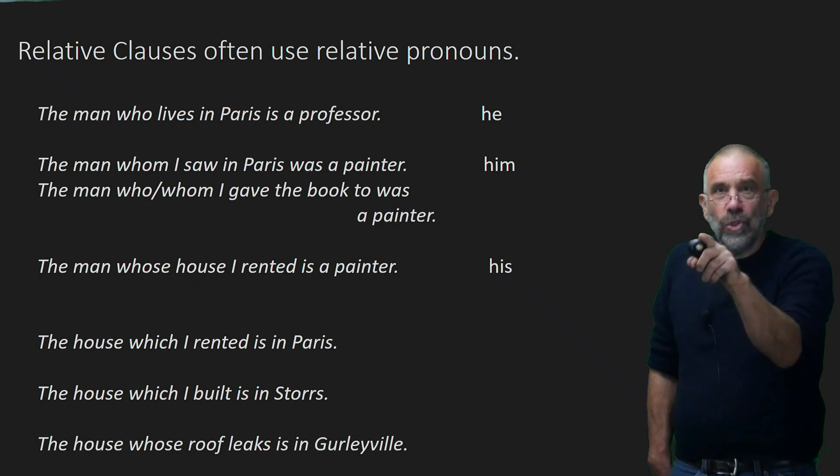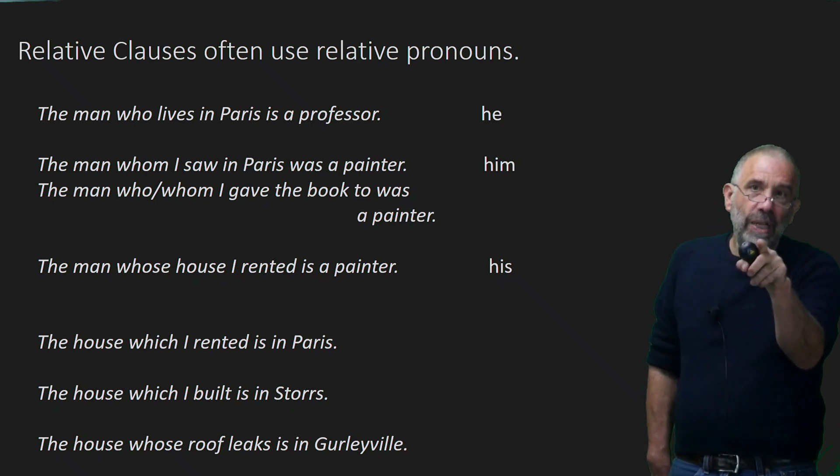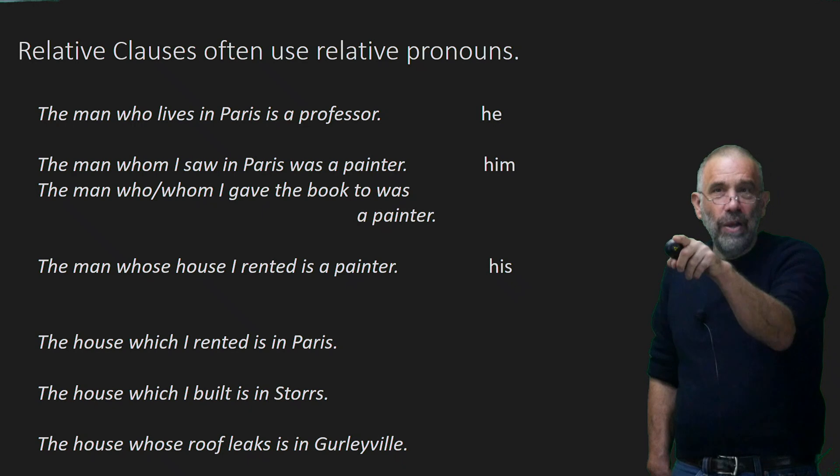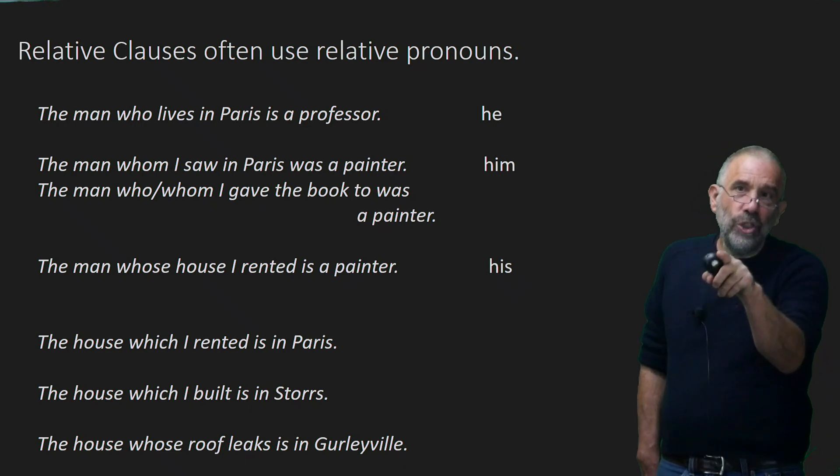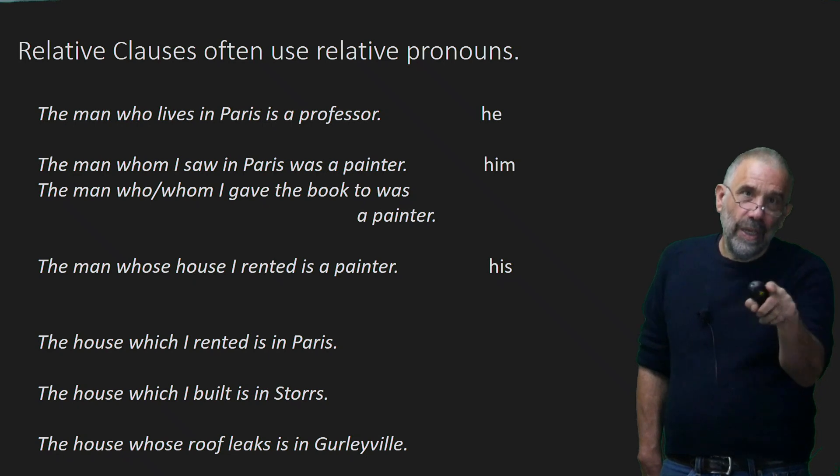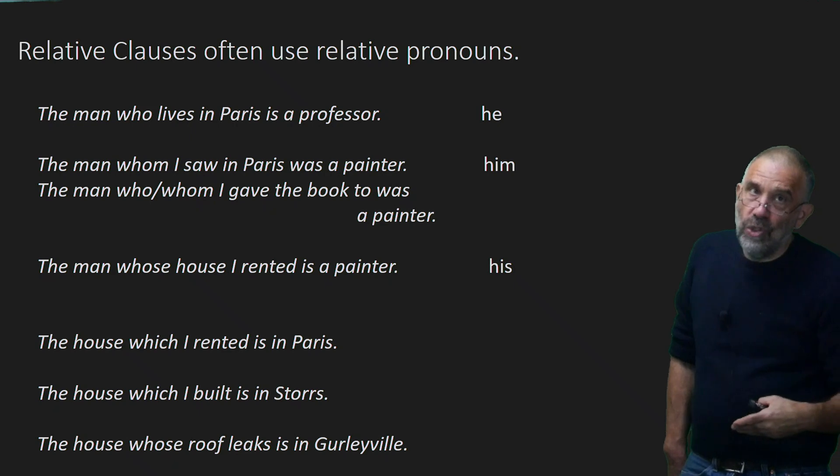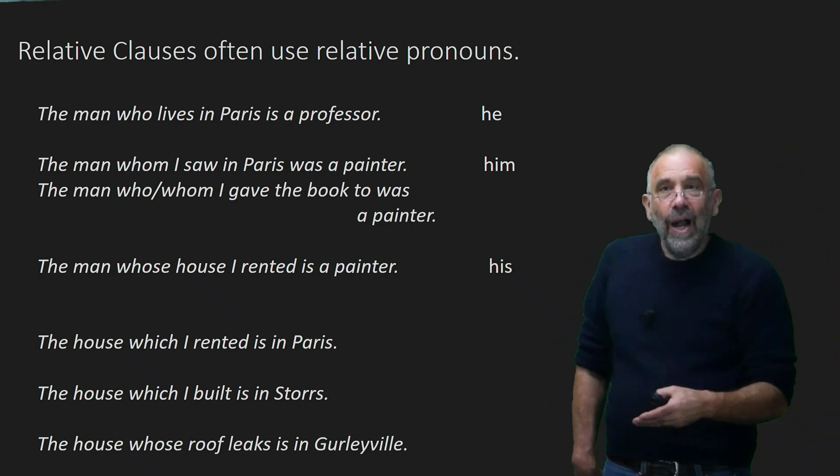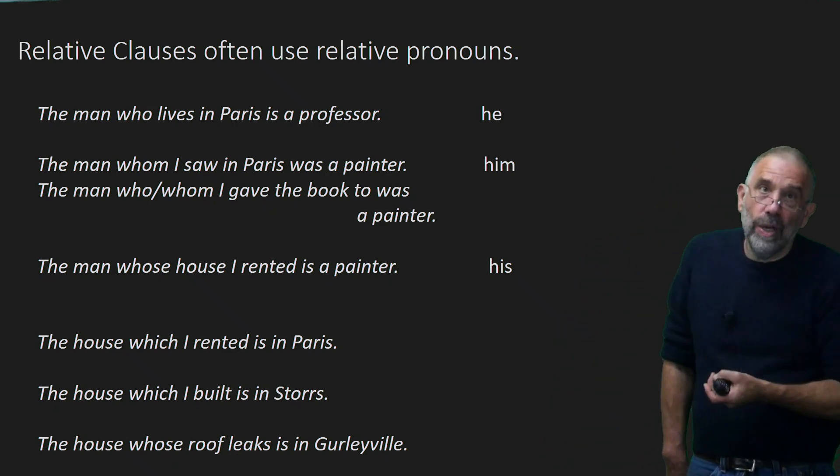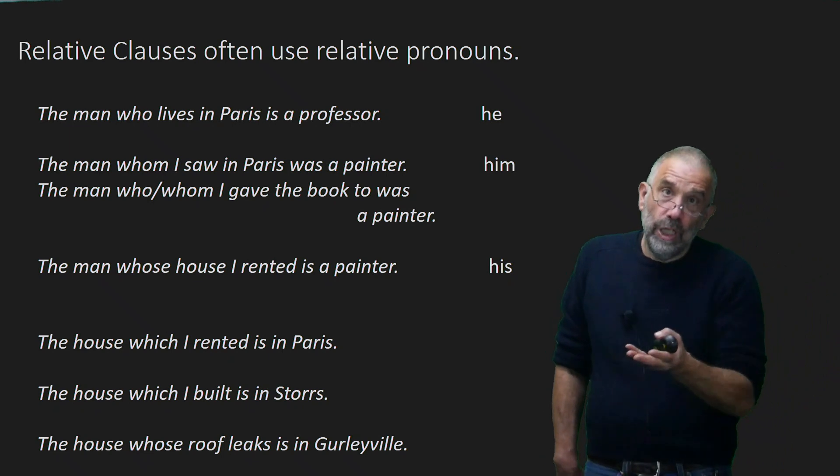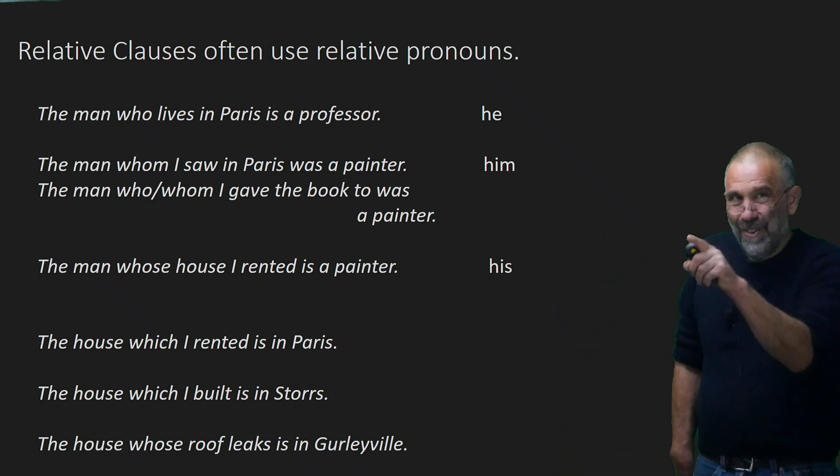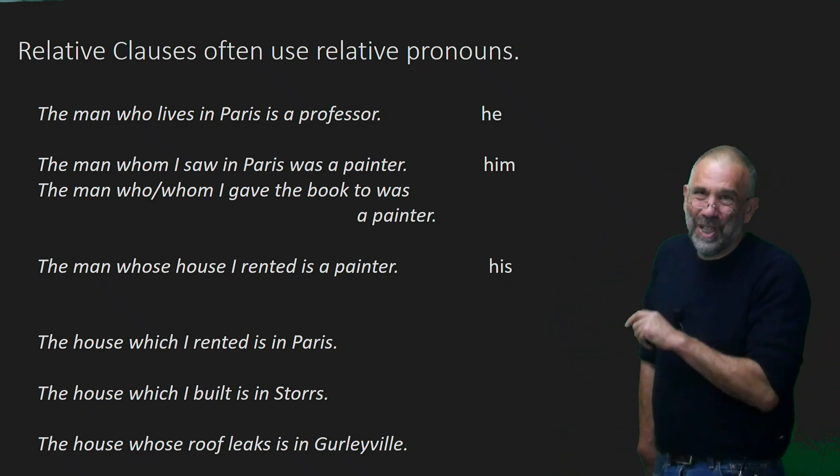So the house which I rented. The which there is a direct object. The house which I built is in Storrs. In both those cases, the which functions as the direct object. The house which is in Paris is beautiful. Their which would be functioning as a nominative. That should have been one of my two sentences. Forgive me.